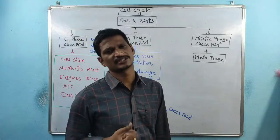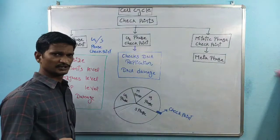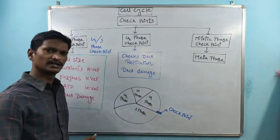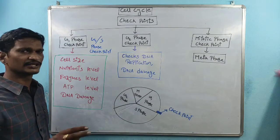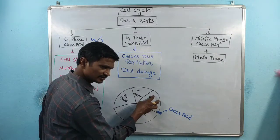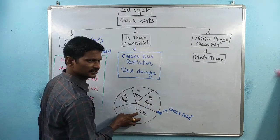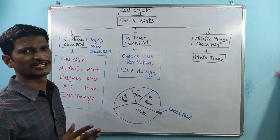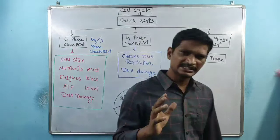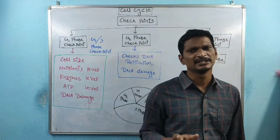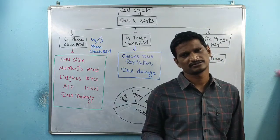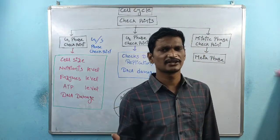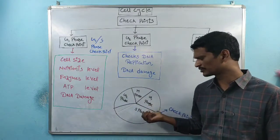This checkpoint regulates and controls the transition. If all conditions are maintained in the G1 phase, then the checkpoint allows entry of the cell cycle into the next phase — that is, from G1 phase into S phase. If the conditions are not maintained, the cell division will be halted.